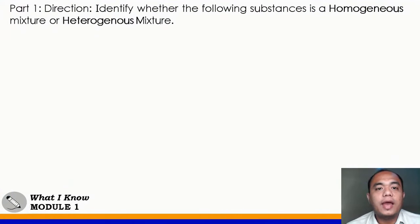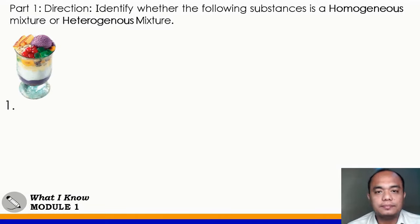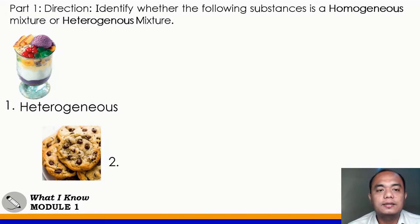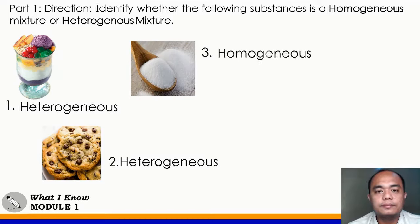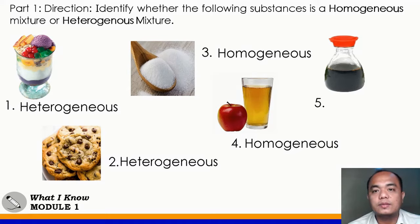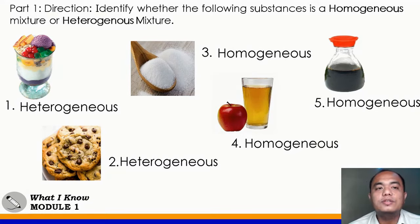Let's have Part 1. Identify whether the following substances are a homogeneous or heterogeneous mixture. Just say your answer. Number 1: halo-halo — heterogeneous mixture. Number 2: cookies — heterogeneous mixture. Number 3: sugar — homogeneous mixture. Number 4: apple juice — homogeneous mixture. Number 5: soy sauce or patis — homogeneous mixture. Very good!